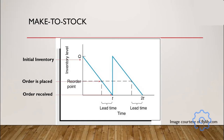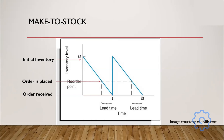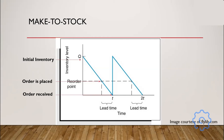When we deal with a make-to-stock system, we start off with an initial inventory determined to maintain a product at a certain level of demand. As we go through time, inventory is drawn down through demand until we reach a reorder point, at which we trigger an order to be placed. When the order is placed, the product continues to be drawn down through demand until we reach the point of T.